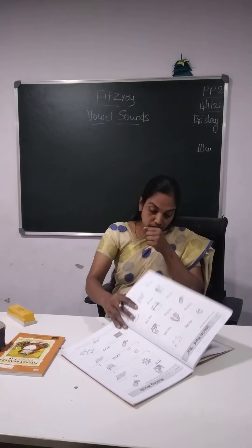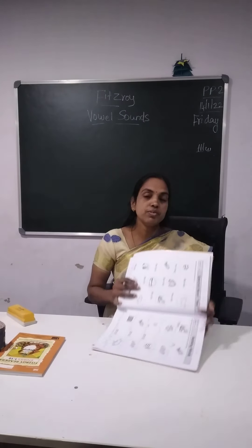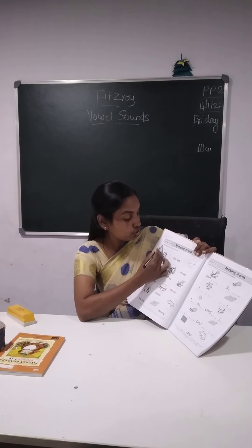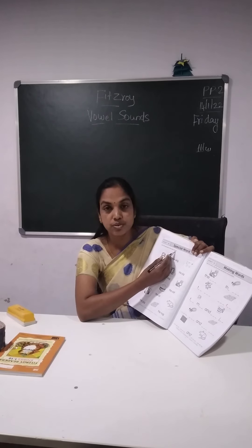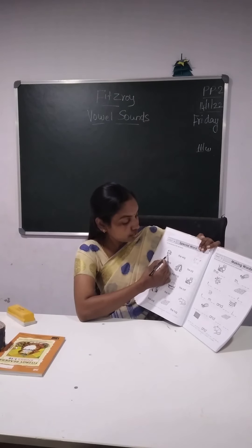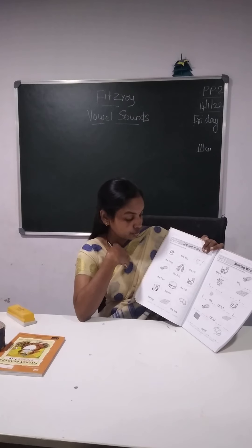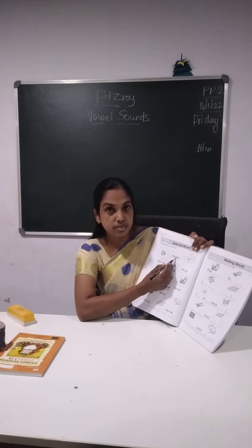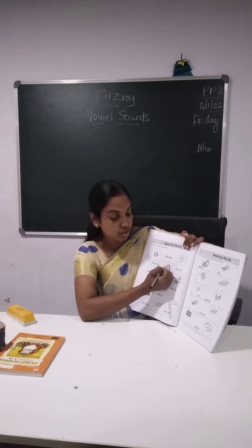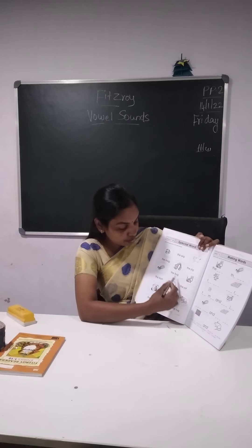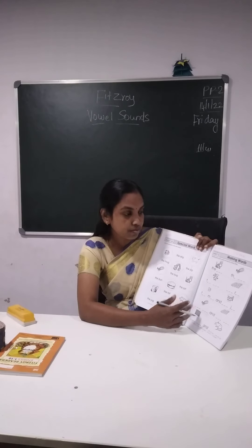Next is special words. The special word is 'the.' Join the pictures to the right words. Here it is mug — where is mug? The mug — so you will join here. Next: wig — the wig, where is it? It is here, join here. Next: the pig — it is here, join. Same way, the others you will all be doing as homework.